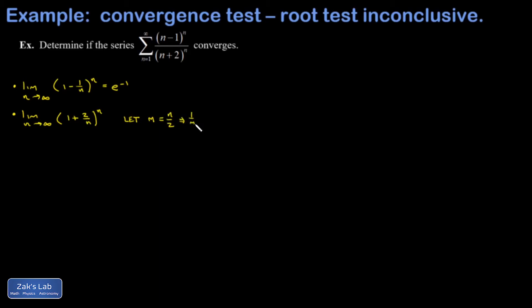That means 1 over m is 2 over n. I'm trying to replace 2 over n with a 1 over m. My exponent now becomes 2m. And as n becomes large, m becomes large. So I have a limit as m goes to infinity, 1 plus 2 over n, but that's 1 over m. And then my exponent becomes 2m. I could write that as the limit of 1 plus 1 over m to the m, all squared. The thing in the brackets there is just e, so I get e squared.